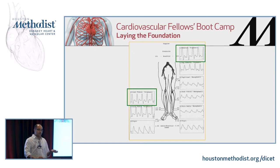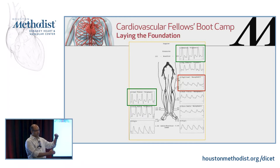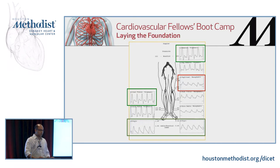When we do segmental pressures, we see triphasic waveforms, and then those triphasic waveforms become monophasic. As the waveform changes, the clue is the disease is between that portion. So if you have triphasic at the common femoral and monophasic at the popliteal, your disease is somewhere in between. If the waveform changes between the popliteal and the tibial, then the disease is in that segment.